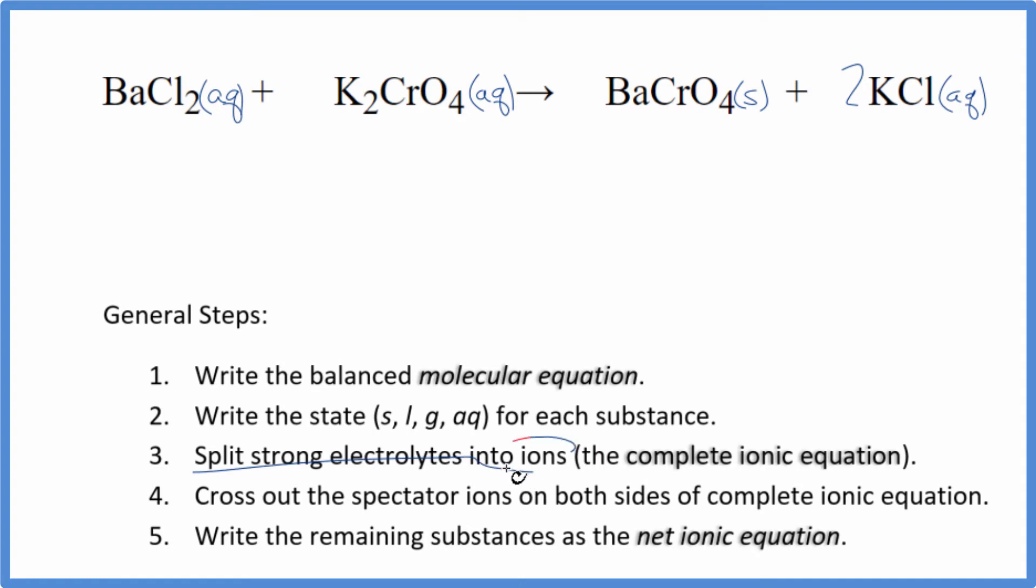Next, we split the strong electrolytes into their ions for the complete ionic equation. Barium, group 2 on the periodic table, that's 2+ chloride ion, 1-. So we have Ba²⁺, and I'll write the states at the end, let's not do that now, plus 2 of the chloride ions.